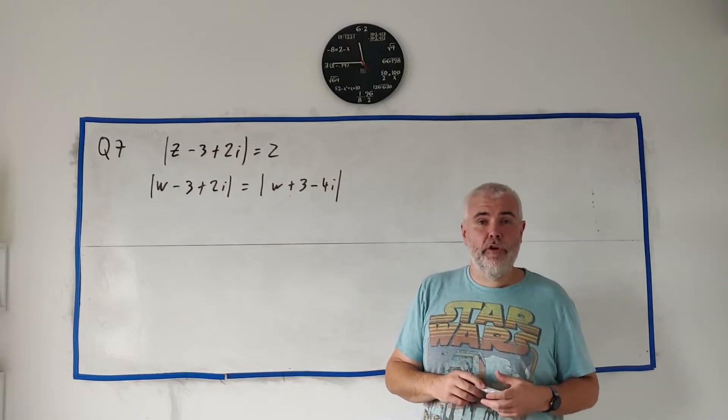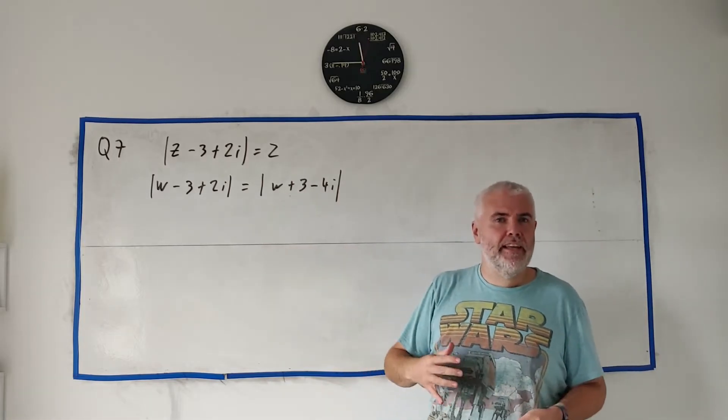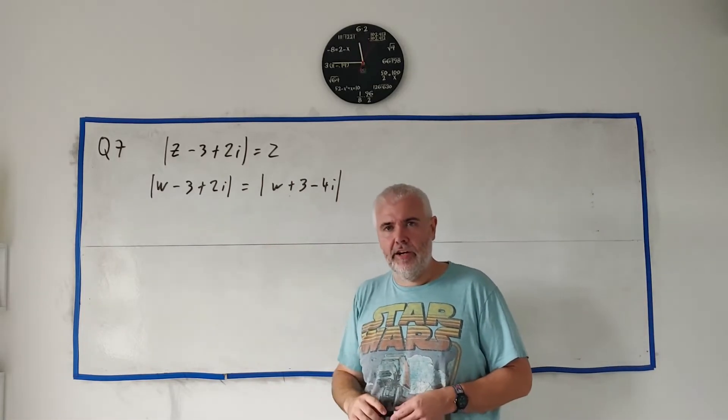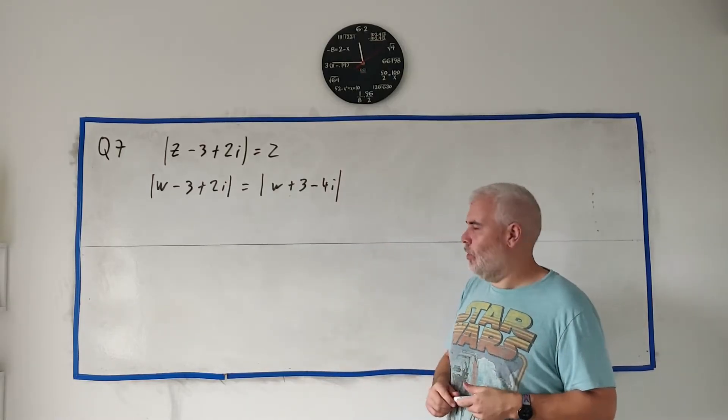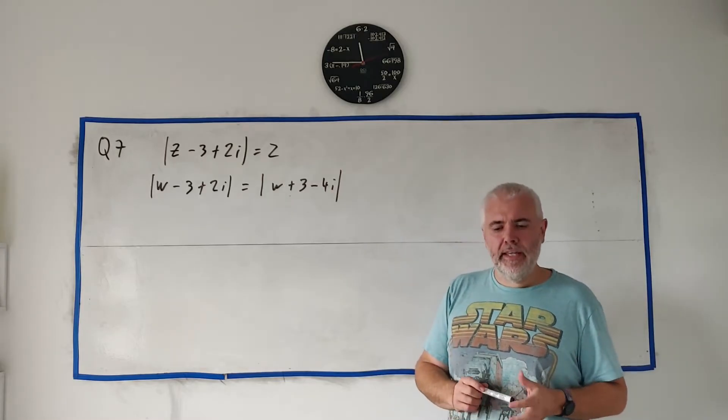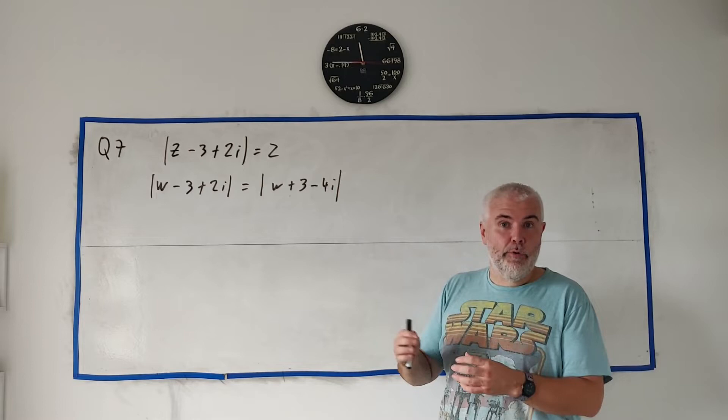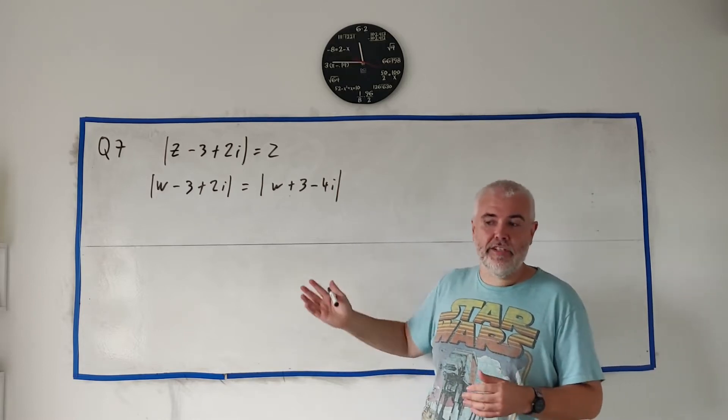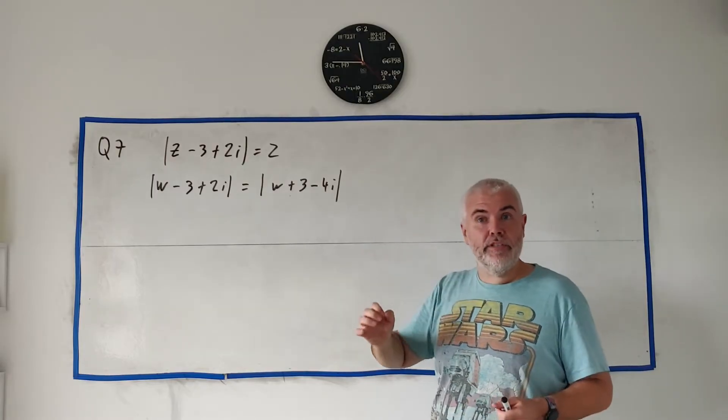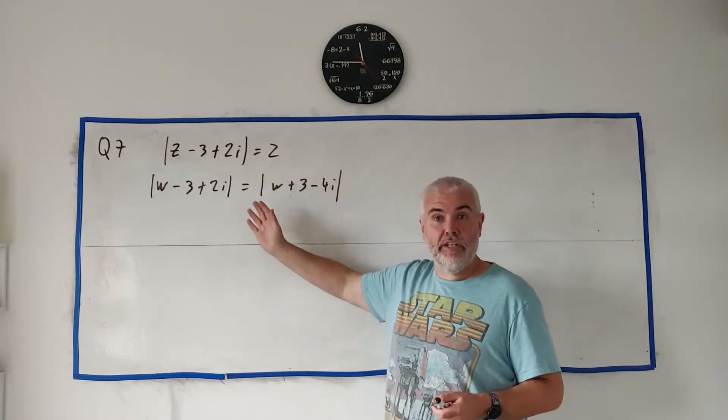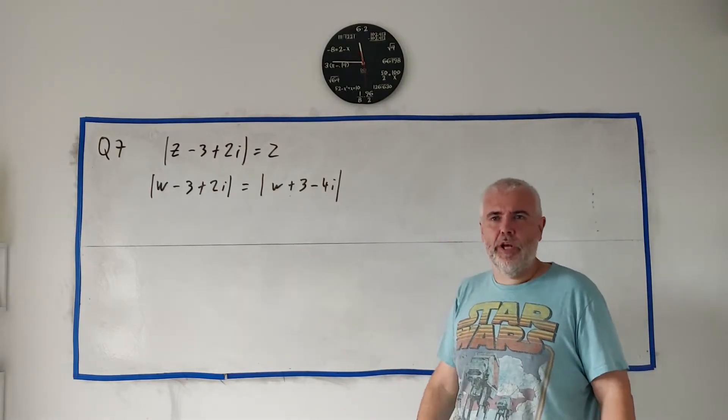Question 7 is all about complex numbers, and in part A, they give us these two equations, and basically they ask us to draw it on an argand diagram. Now, they don't quite say that. They say sketch the loci given by these equations. The loci is just a set of points. Now, the set of points will turn into a line, or in this case, in this question, a line and a circle. So basically, there's lots of points that will answer these equations, millions of them, and they'll look like a line or a circle. I'll explain more as we go on.